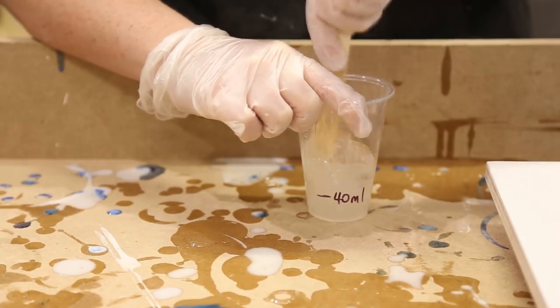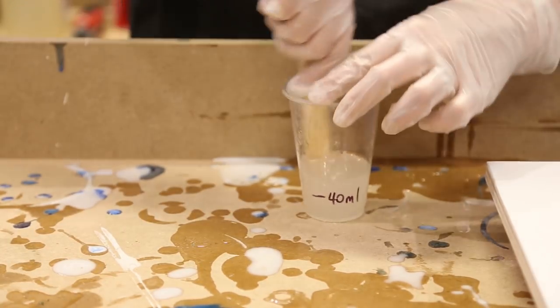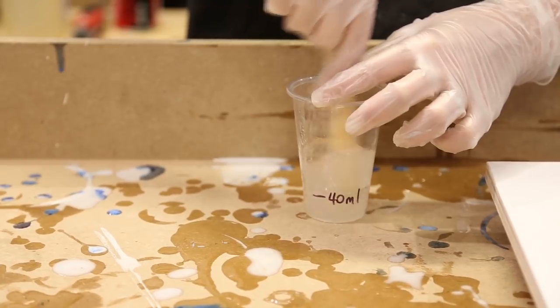Once your pour is finished it is best to leave it in place for 24 hours so that it can set and then set aside for seven days to harden.